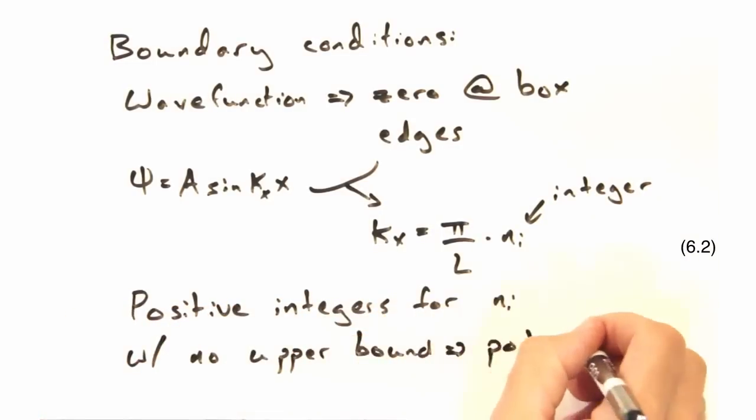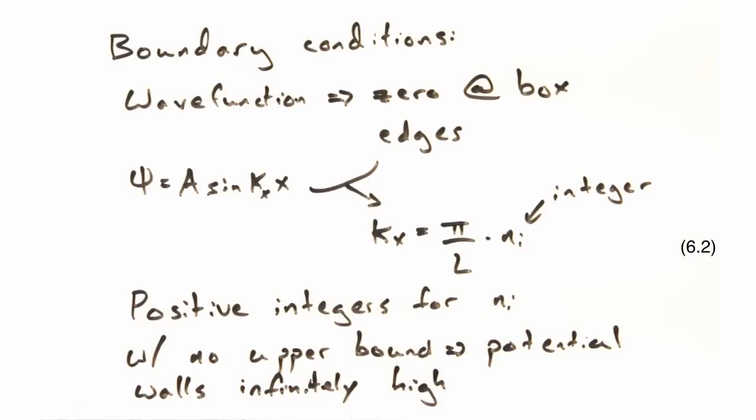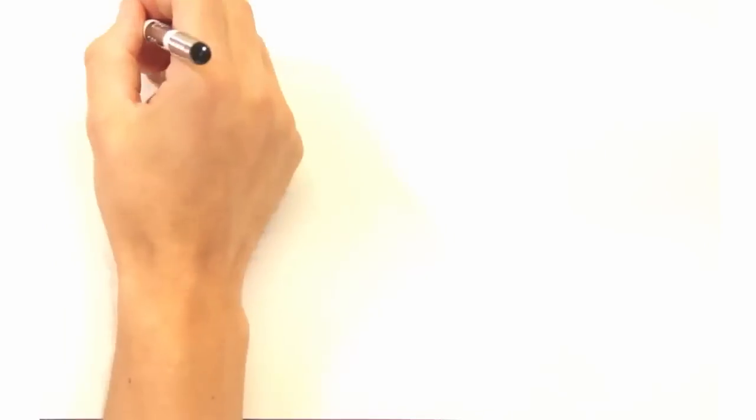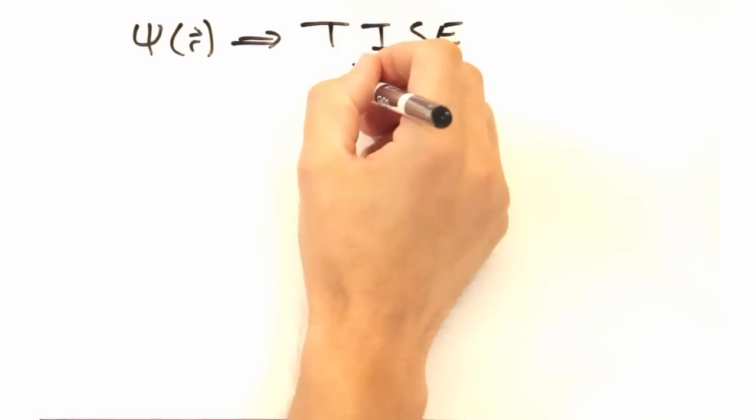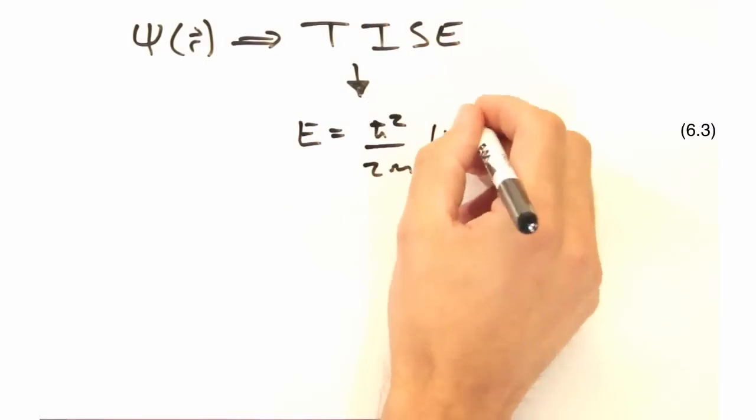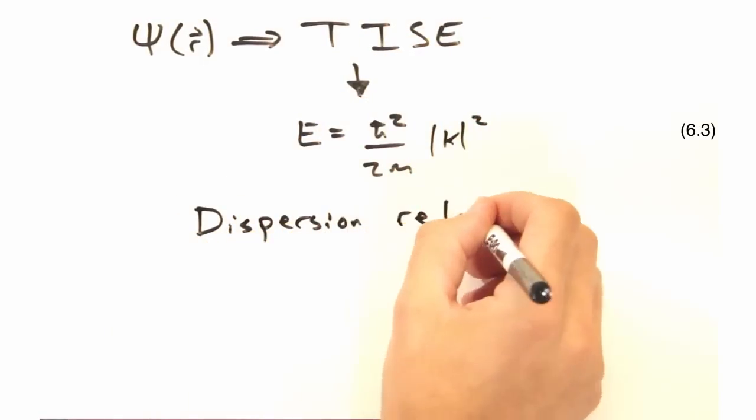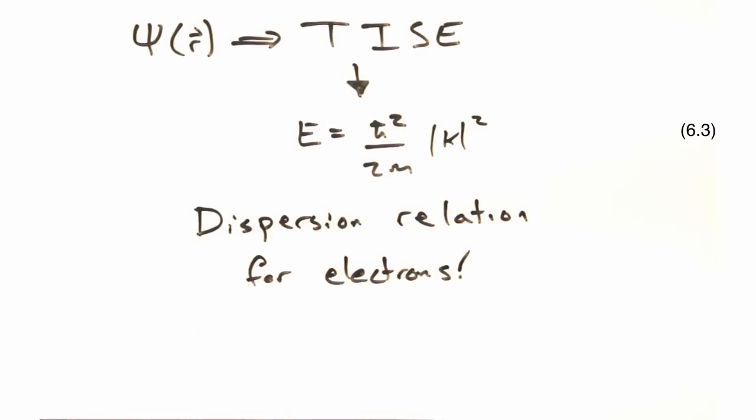Indeed, and thus we only have positive integers for n sub i without an upper limit, because our potential is infinitely tall. And now that we have our wave function, we can plug that back into our Schrödinger's equation and get a quadratic relationship between our system energy and our k values.